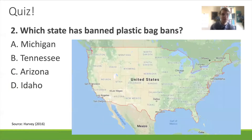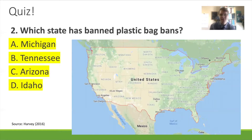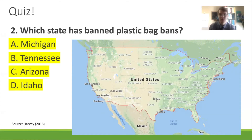Next question: which state has banned plastic bag bans? So this is a ban on the banning of plastic bags. Your options are Michigan, Tennessee, Arizona, and Idaho. The answer is all of them. So 17 states have passed state-level bans on the banning of plastic bags. These are known as preemptory bans because they preempt local jurisdictions from banning plastic bags and often other single-use plastics.